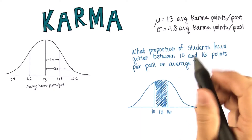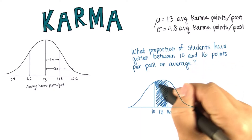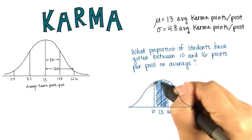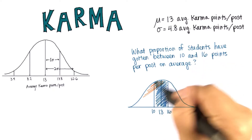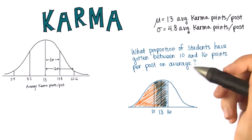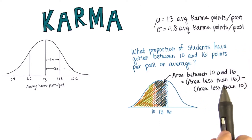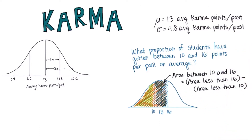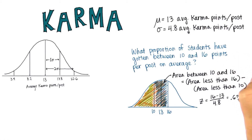What we'll do is find the area under 16, and then subtract the area less than 10. So what's the area less than 16? First, let's convert 16 to a z-score: 16 minus 13 divided by 4.8, which gives us 0.625.